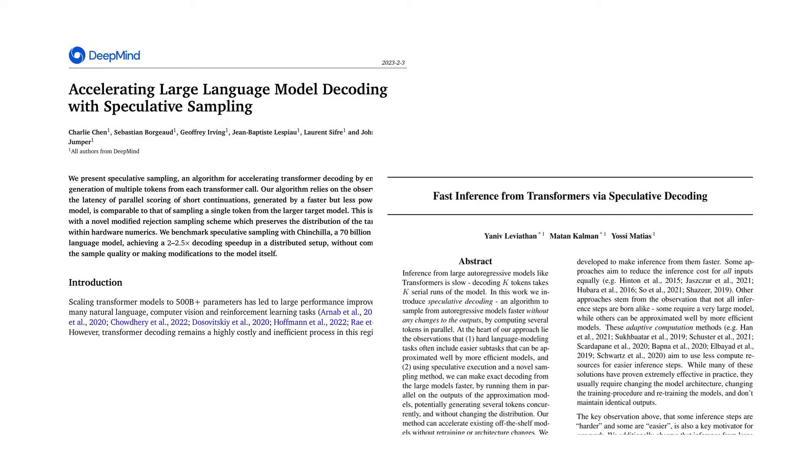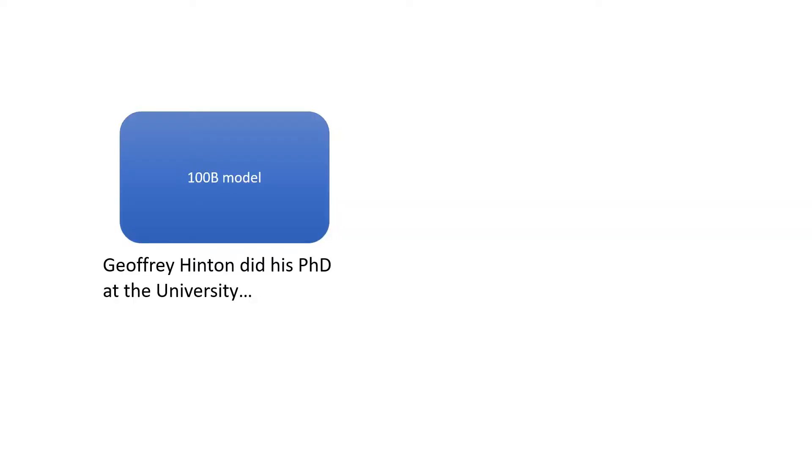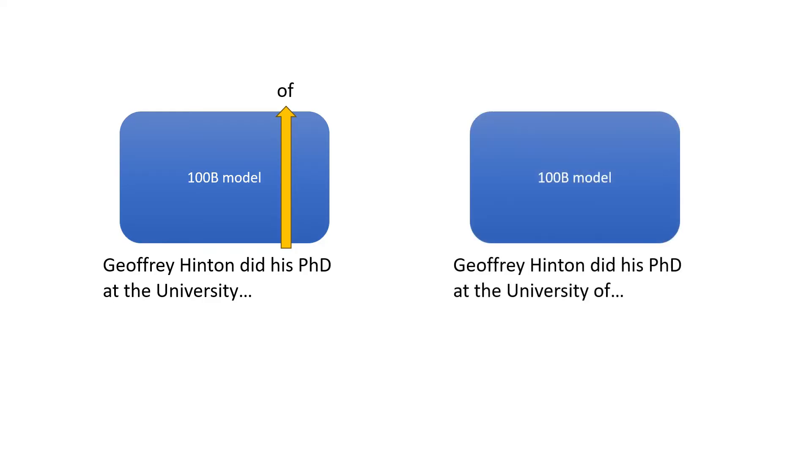Let's suppose that we are generating a sentence using a very large 100 billion parameter model. That means that for every token we want to generate, we have to do a forward pass through the whole model, which roughly takes 100 billion operations. We have to do the process all over again to generate the next token.